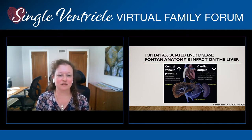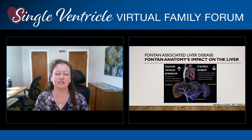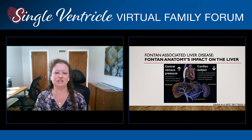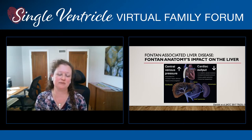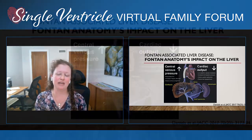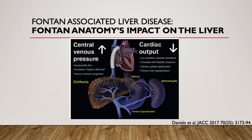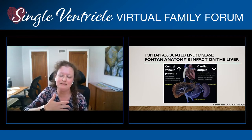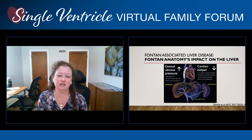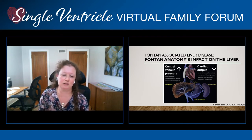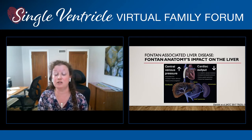I want to talk about the Fontan anatomy and how it impacts the liver. There are two main things that happen in Fontan physiology. One is increased central venous pressure — when the hepatic vein sees increased pressure, that backflow from the elevated heart-side pressure causes something called hepatic afterload, meaning those vessels leading from the liver have higher pressure, making it harder to get blood flow going forward. This backs up into the liver, causing passive venous congestion, and over time scar tissue develops, eventually leading to cirrhosis.